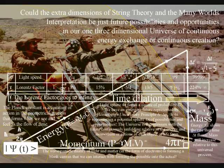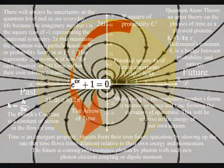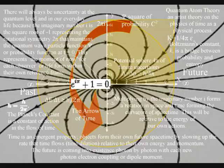There will always be uncertainty, or probability, at the quantum level and in our everyday life, because the imaginary number i is the square root of minus one, representing the rotational symmetry, two pi, that maintains the quantum wave particle function.